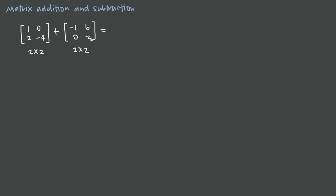When I add two matrices together, the dimensions of the result will always be equal to the dimensions of the original matrices. So the dimensions of the result here will also be 2 by 2. In order to add, all I do is add corresponding entries. So 1 plus negative 1 gives me 0, recorded in the 1,1 position. 0 plus 6 gives me 6, 2 plus 0 gives me 2, and negative 4 plus 2 gives me negative 2. So the sum of those two matrices is this matrix here.